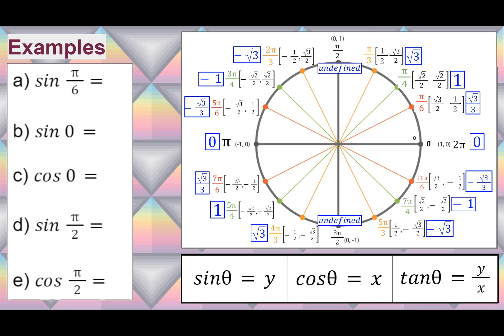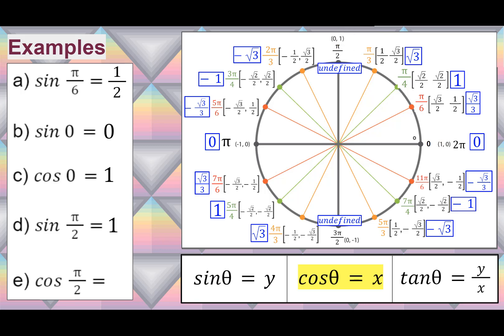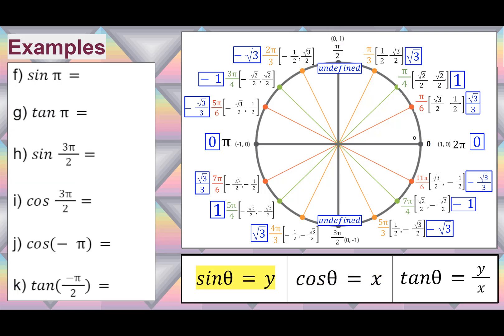Let's use the unit circle to find trigonometric values. Sine of θ equals y/r, but since our radius is 1, sine of θ equals y on the unit circle. So sine of π/6 is the y value at π/6, which is 1/2. Sine of 0 is 0, since the y value there is 0. The x value at 0 is 1. At π/2 the y value is 1 and the x value is 0. Sine of π is the y value at π, which is 0.